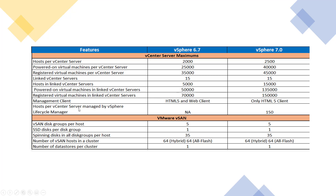For VMware vSAN, many configuration maximums remain the same between 6.7 and 7.0, though there are new features and improvements. You can have 5 disk groups per ESXi host, one cache device (SSD) per disk group, up to 35 spinning disks per storage host, a maximum of 35 disks per disk group or ESXi host, 64 hosts in a vSAN cluster, and one vSAN datastore per cluster.